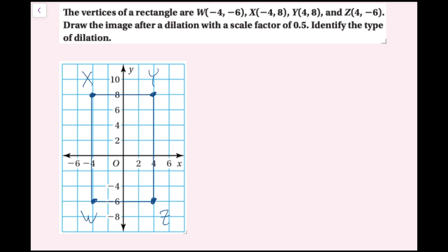Now I'm going to dilate this with a scale factor of 0.5, which means I just multiply each component of my ordered pairs by 0.5 — the same as multiplying by one-half or dividing by two. So instead of w(-4, -6) I go to (-2, -3). For x(-4, 8) cut in half gives (-2, 4), that's x prime. And for y(4, 8) divided by two gives (2, 4).